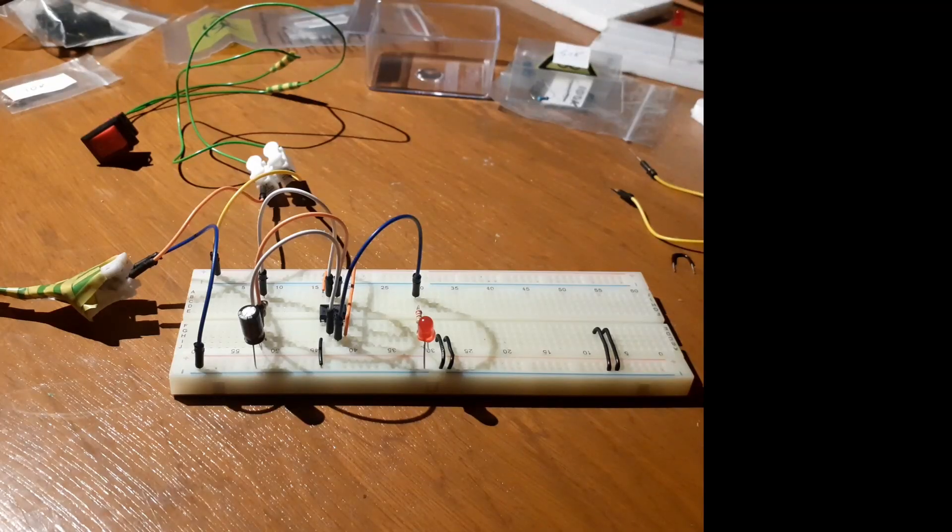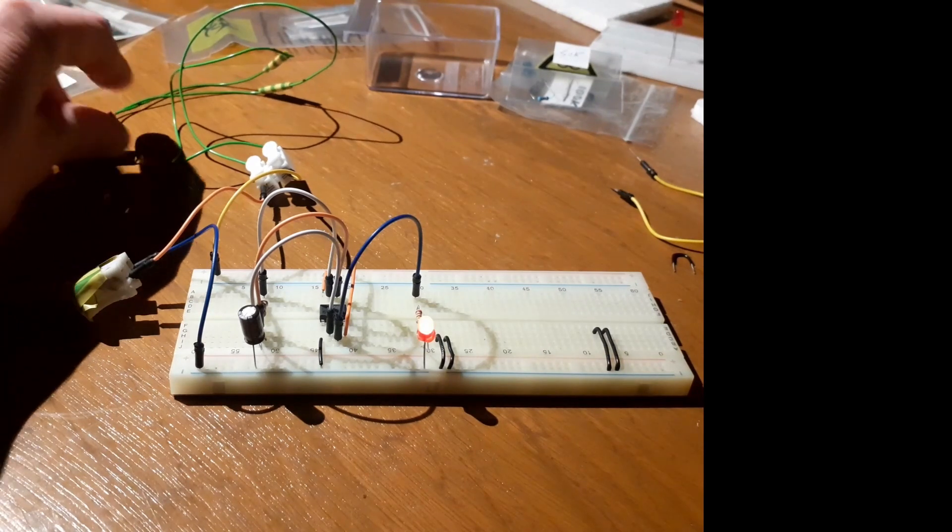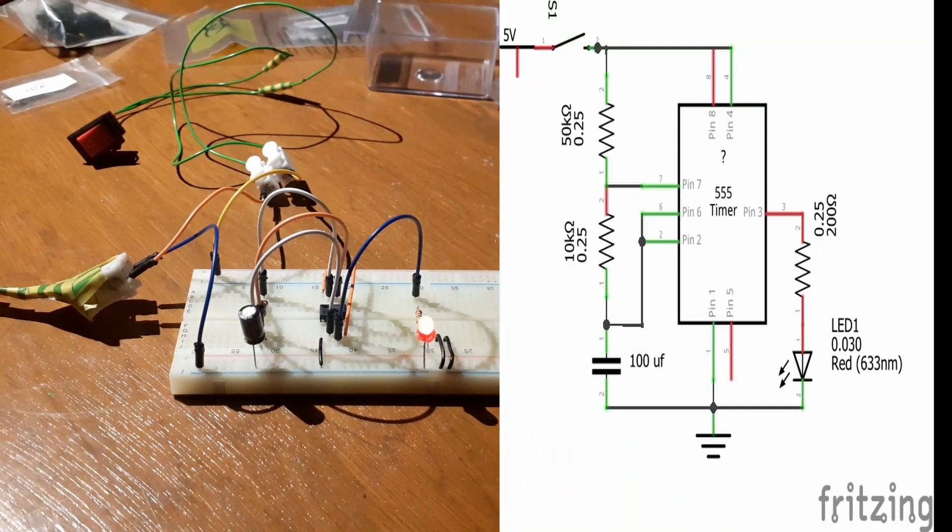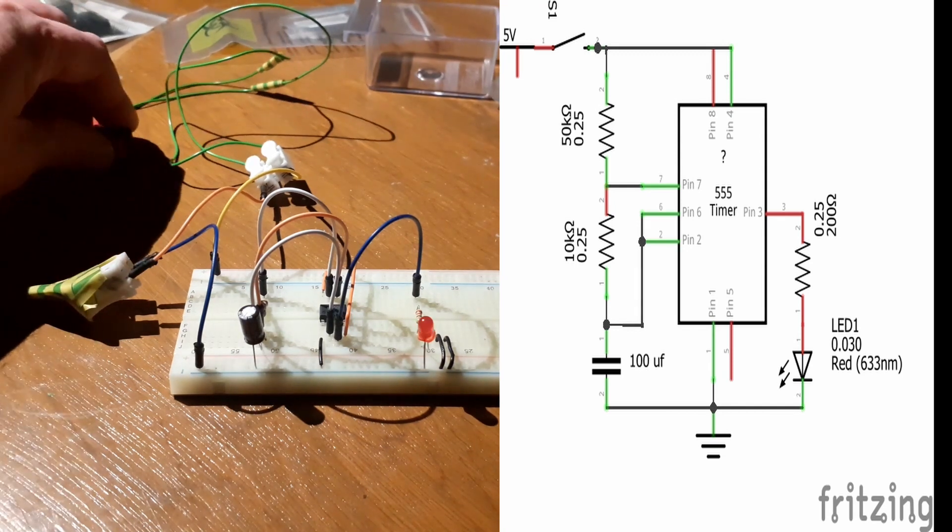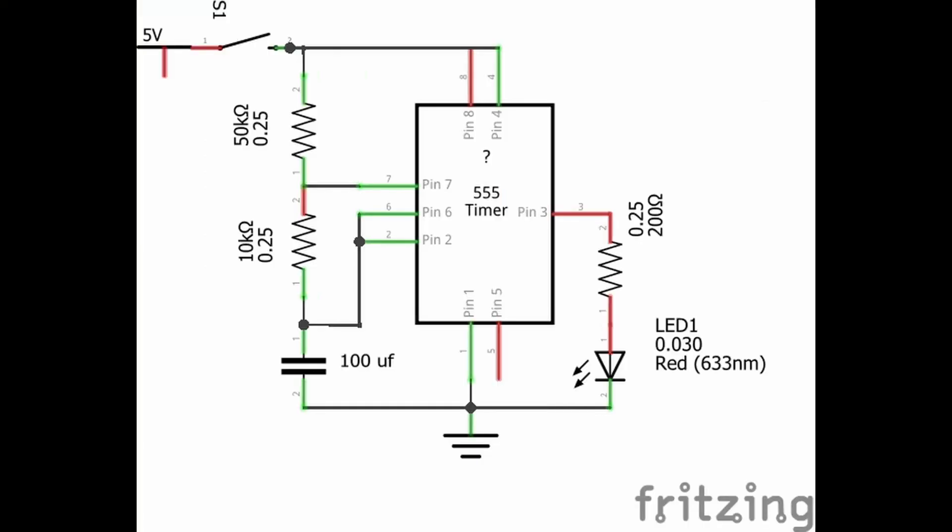Our next example is blinking LED. Close switch S1, current flows to ground through the capacitor. So pin 2 low, pin 3 high, LED on. There is a time delay while the capacitor charges up through the two resistors, after which pin 2 is high and pin 6 is high. So pin 3 low, LED off.